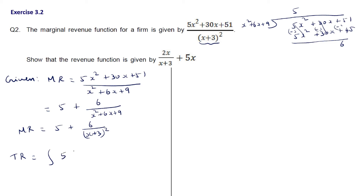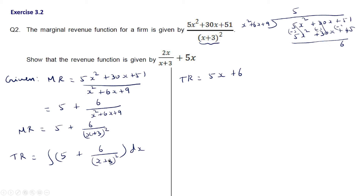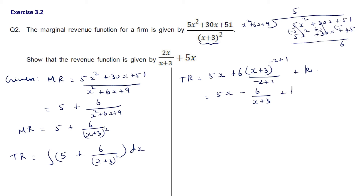The total revenue function is the integral of the marginal revenue function. It is the integral of [5 + 6/(x+3)²] dx. Integrating: integral of 5 dx is 5x, plus 6 times the integral of (x+3)^(-2), which gives (x+3)^(-1)/(-1). So total revenue = 5x - 6/(x+3) + k.